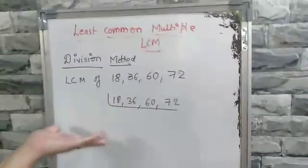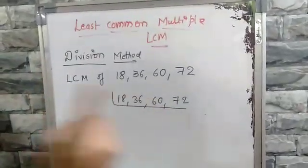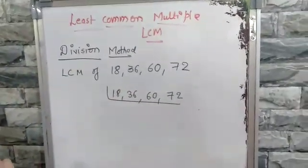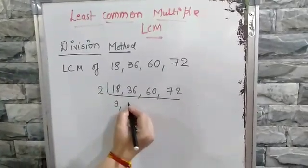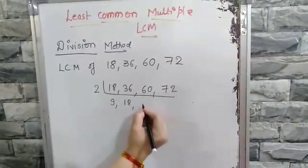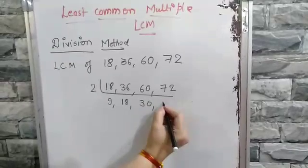Almost all the numbers are divisible, so we will start with the smallest one. If any single number is divisible by the prime number, we have to start. Two nines are 18, two eighteens are 36, two thirties are 60, two thirty-sixes are 72.